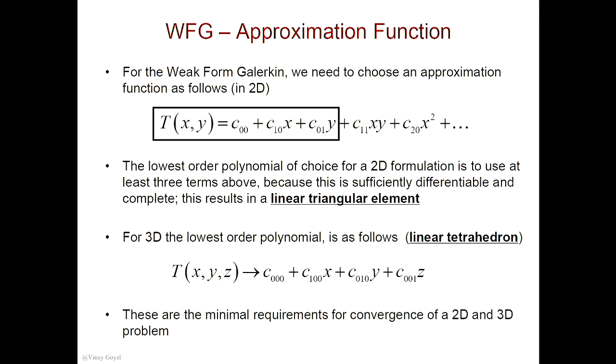For a linear triangular element — just a triangular element with three nodes, one at each corner — how many unknown nodal quantities do I have? Three. It's temperature; the only unknown is temperature at each node, and there are three nodes. So how many unknown coefficients should I select for my temperature field? Three. So if I have three unknown nodal quantities, I should have three unknown coefficients. That's why I stopped here — because I need three unknown coefficients to tackle the problem.